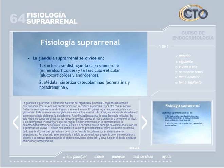La glándula suprarrenal, a diferencia de otras del organismo, presenta dos regiones claramente diferenciadas. Por un lado nos encontramos con la corteza suprarrenal y por otro con la médula. En la corteza suprarrenal se distinguen a su vez dos zonas. En primer lugar encontramos la capa glomerular, que es la encargada de sintetizar los mineralocorticoides, siendo el más abundante y con mayor efecto biológico la aldosterona.